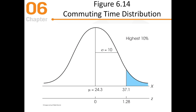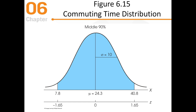Looking at commuting time: the average person commutes 24.3 minutes with a standard deviation of 10 minutes. You can find how many minutes you'd need to be in the car to be in the top 10% of commuters. You'd need a z-score of 1.28, which corresponds to 37 minutes — that qualifies you for the highest 10%. For the middle 90%, since the distribution is symmetrical you split the tails: z-scores of negative 1.65 and positive 1.65, meaning you'd commute between 7.8 and 40.8 minutes.